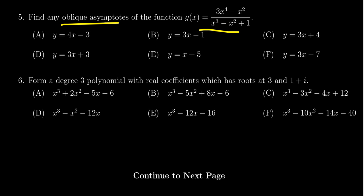An oblique asymptote exists exactly when the numerator has a degree larger than the denominator by 1. Since it's 4 over 3, the oblique asymptote does exist. And that oblique asymptote is going to be the quotient when we take the numerator divided by the denominator.